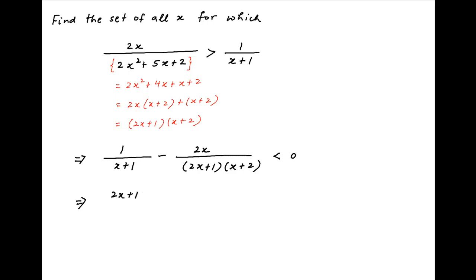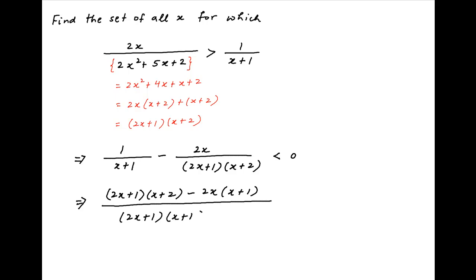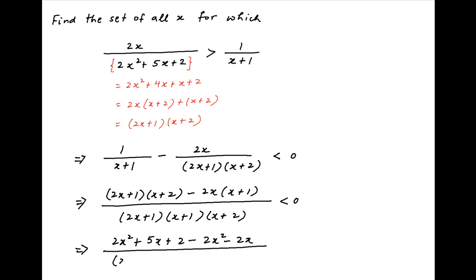Taking a common denominator on the left-hand side, we get (2x plus 1)(x plus 2) minus 2x(x plus 1), all divided by (2x plus 1)(x plus 1)(x plus 2), is less than 0. This implies that 2x squared plus 5x plus 2 minus 2x squared minus 2x, divided by (2x plus 1)(x plus 1)(x plus 2), is less than 0.